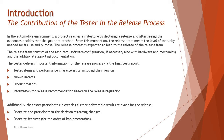The tester delivers important information for the release process via the final test report. The test report can include the tested items and performance characteristics including their specific version, known defects, product matrices, and information for release recommendations based on the release regulations — meaning what kind of recommendations come from standards and regulations that need to be met in order to deploy this product as part of an automobile.